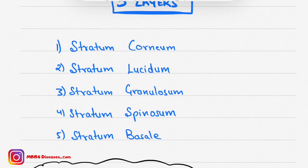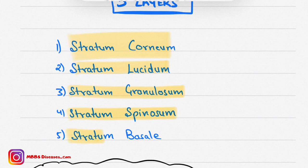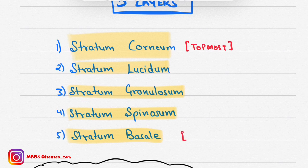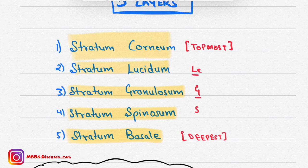There are five layers of epidermis: stratum corneum, stratum lucidum, stratum granulosum, stratum spinosum, and stratum basale. Stratum corneum is the topmost layer and stratum basale is the deepest layer. To remember the middle three layers, use the mnemonic LGS: L for lucidum, G for granulosum, S for spinosum.